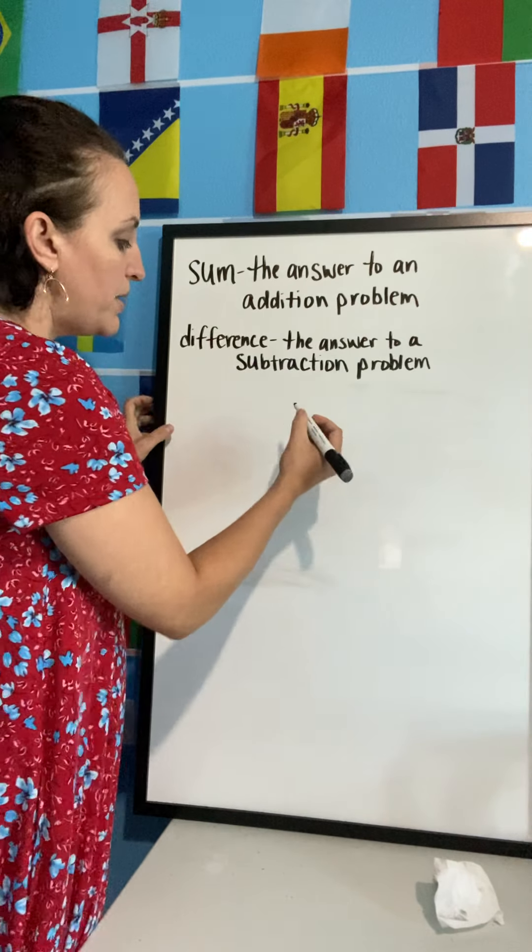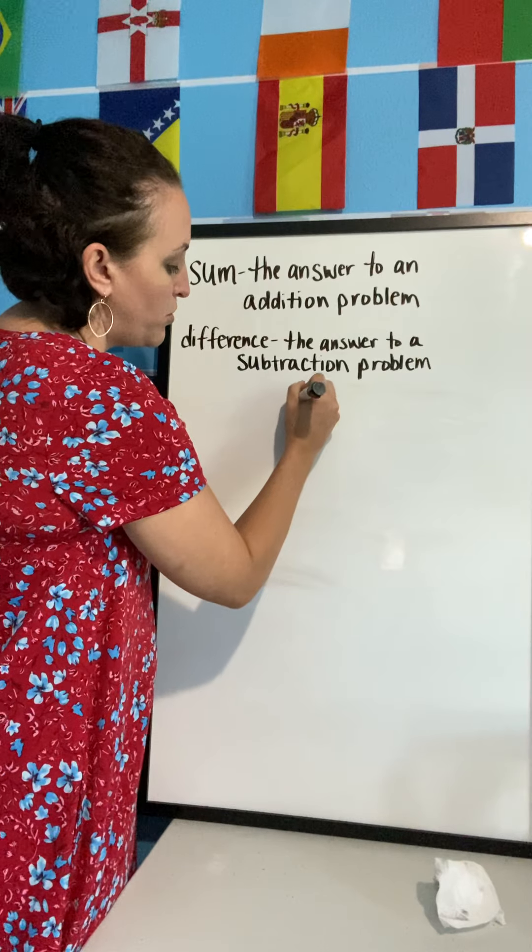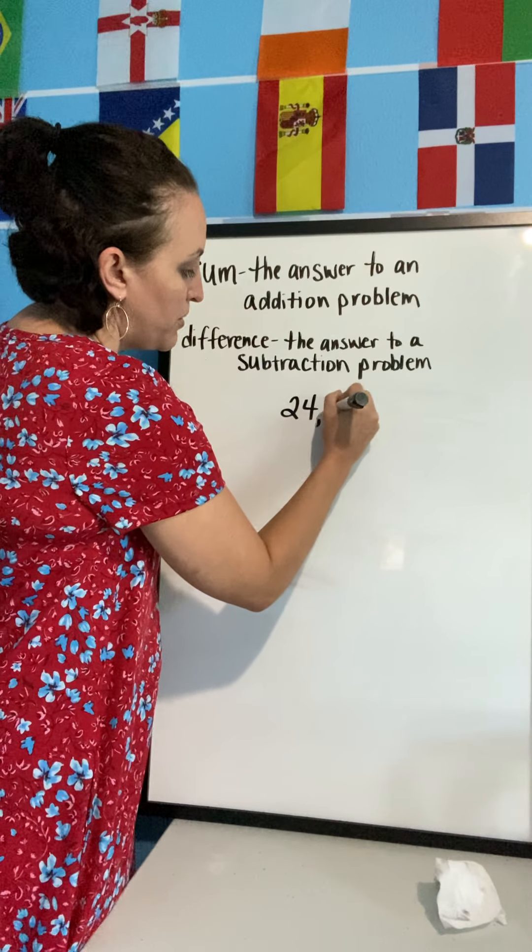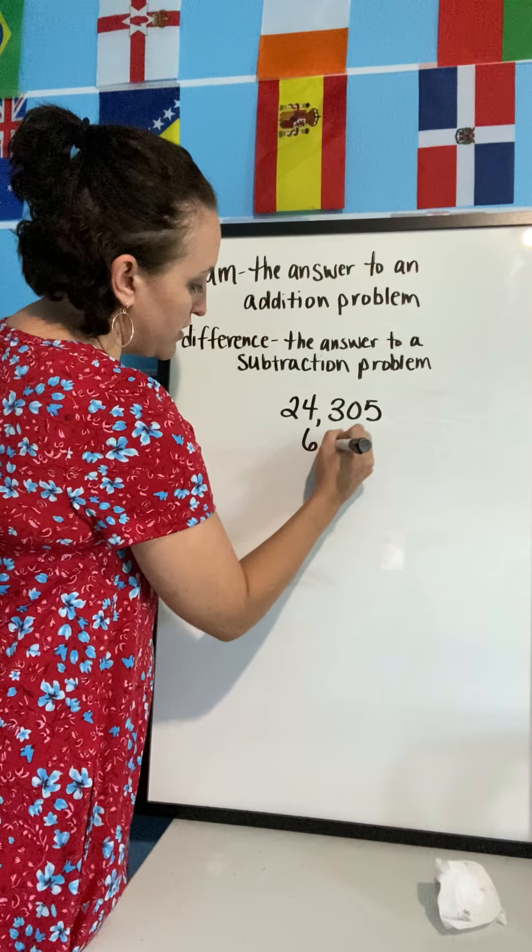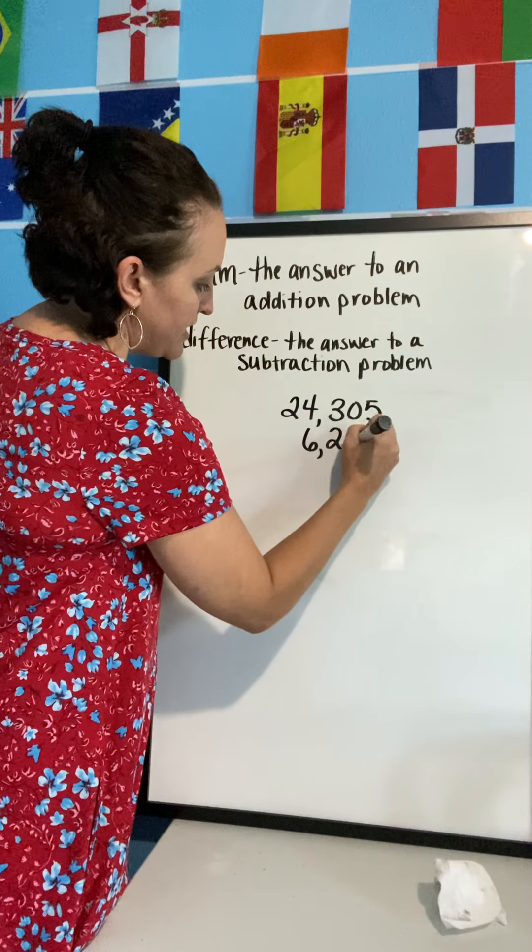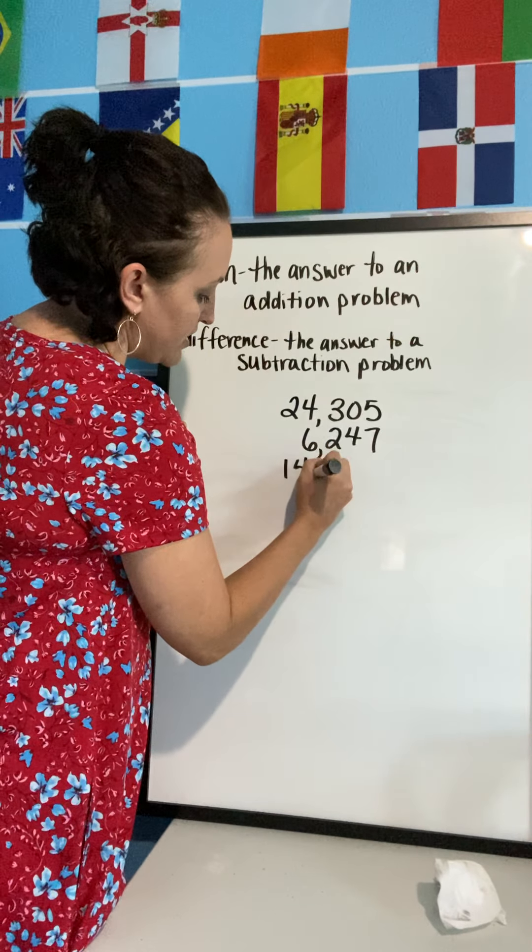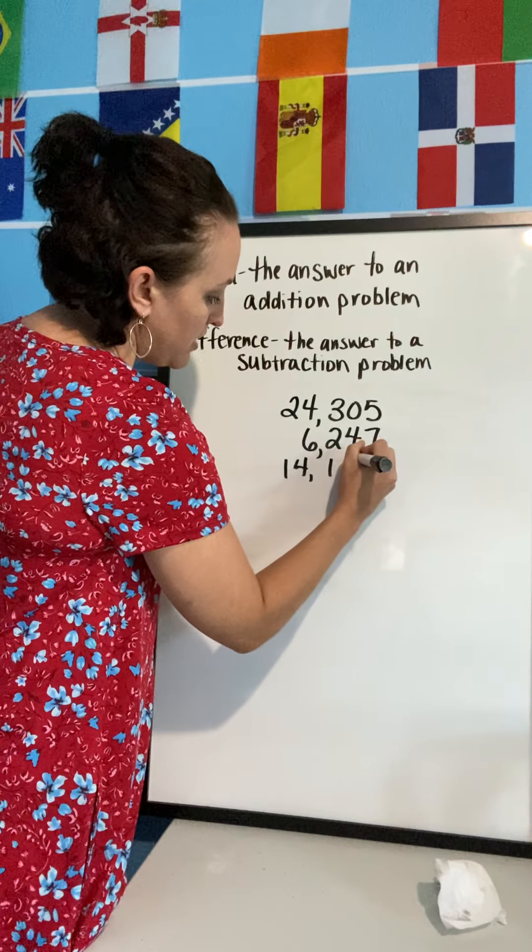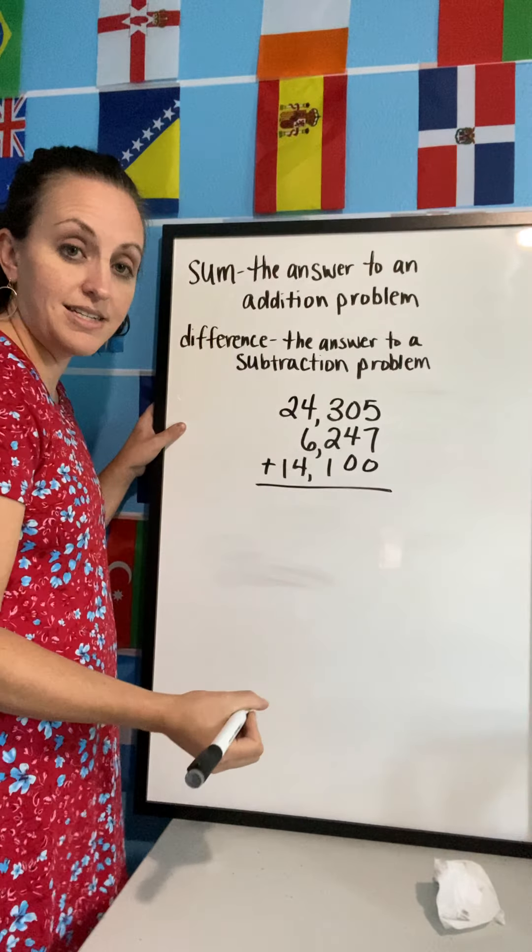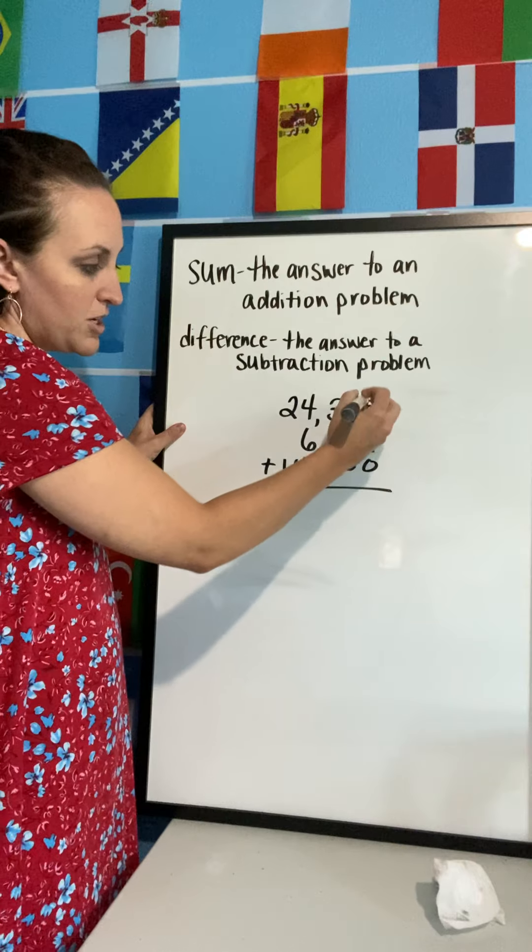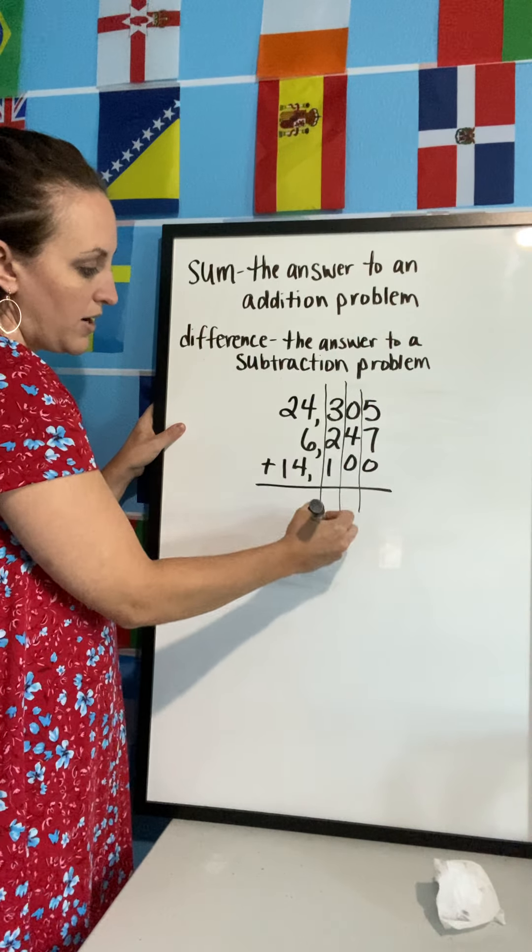So if I have 24,305 and then I have let's say 6,247, and then I have let's say 14,100. I'm adding this together, it's the same thing. I want to make sure my columns are nice and lined up.